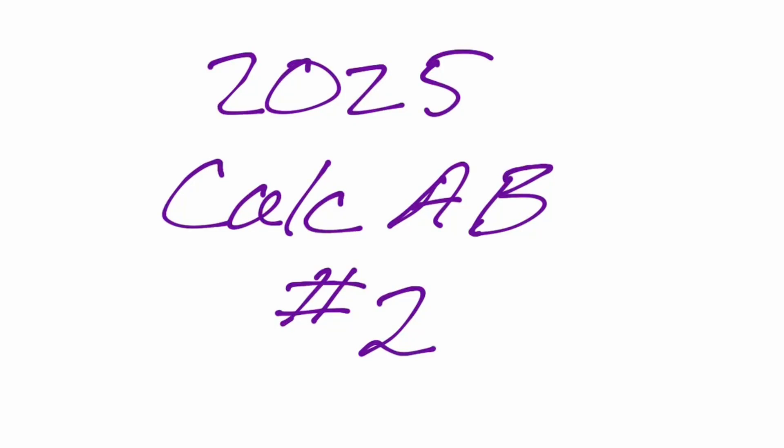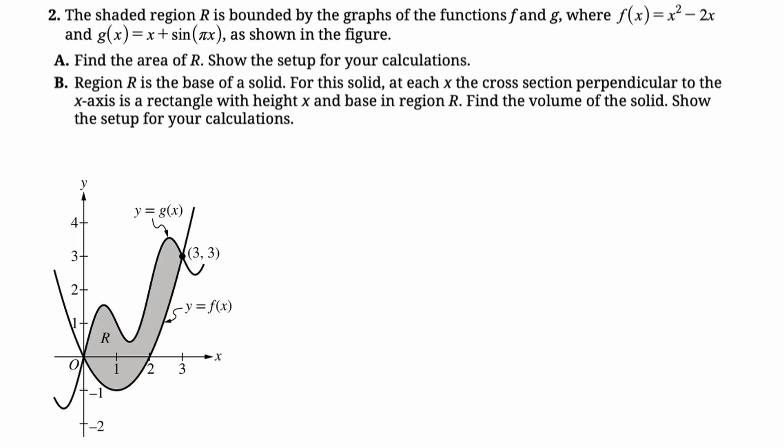In this video we're going to be doing number two from the 2025 Calc AB exam, and it's the area volume problem, and it's calculator. Let's take a look. The shaded region R is bounded by the graphs of f and g, where f(x) = x² - 2x and g(x) = x + sin(πx), and we're given a figure. The figure is huge on the PDF, I had to shrink it down.